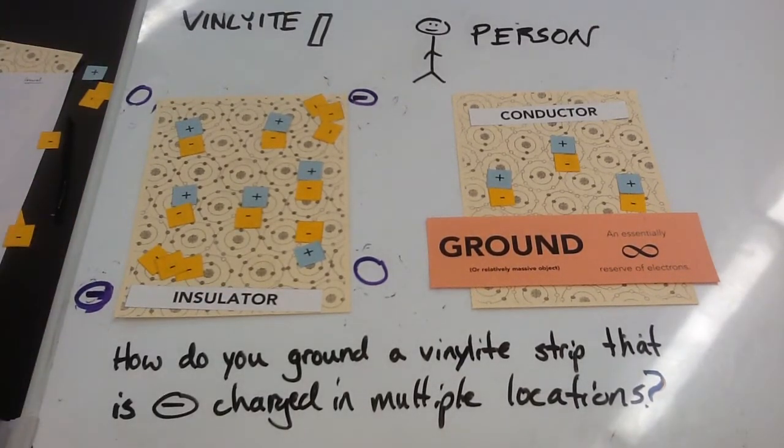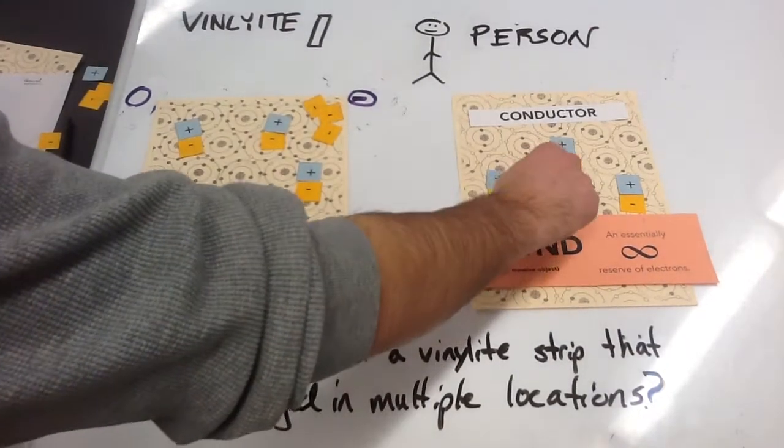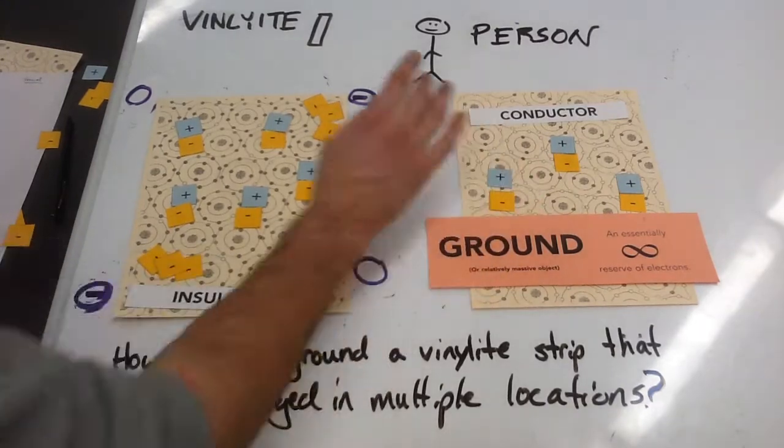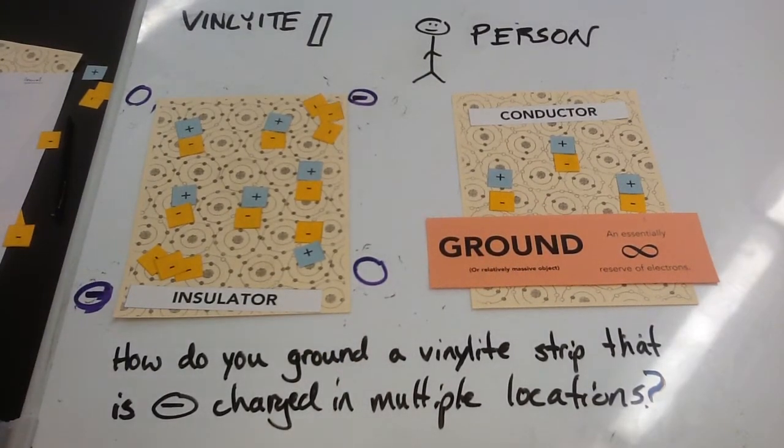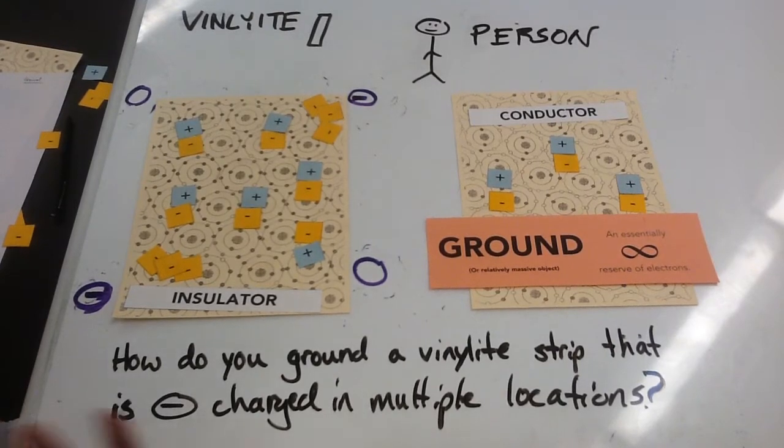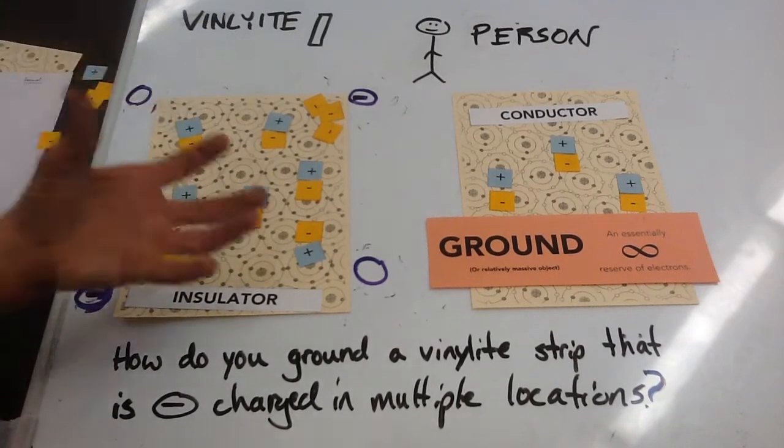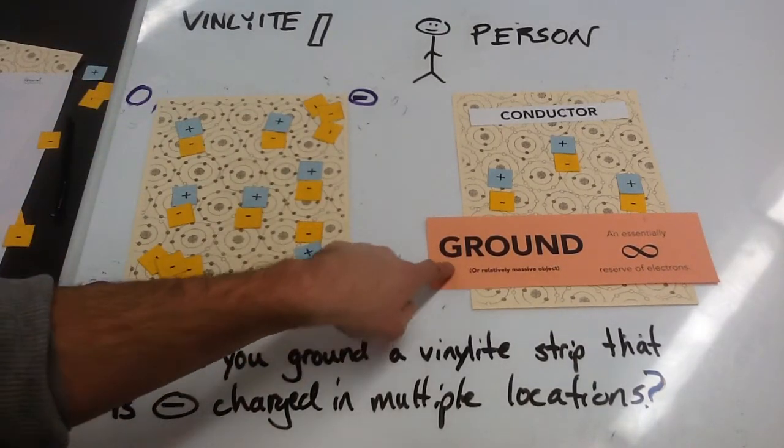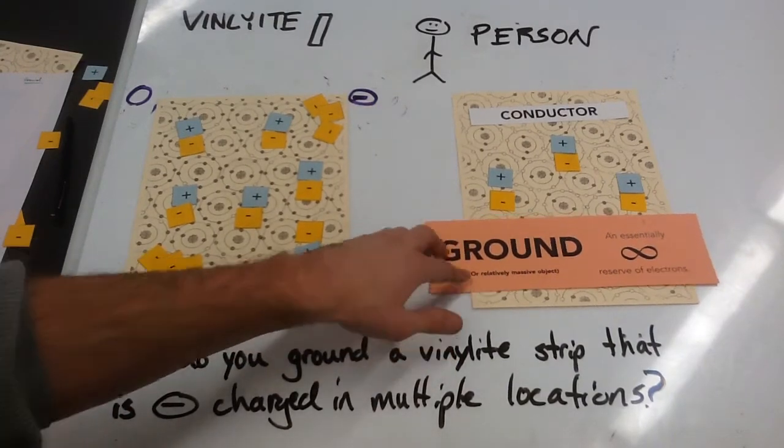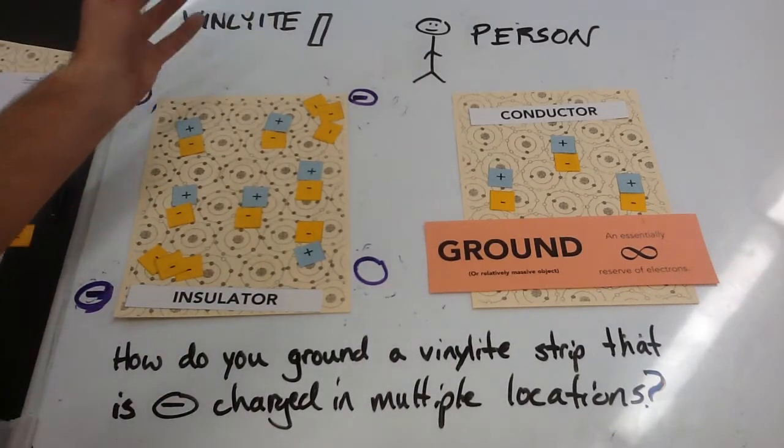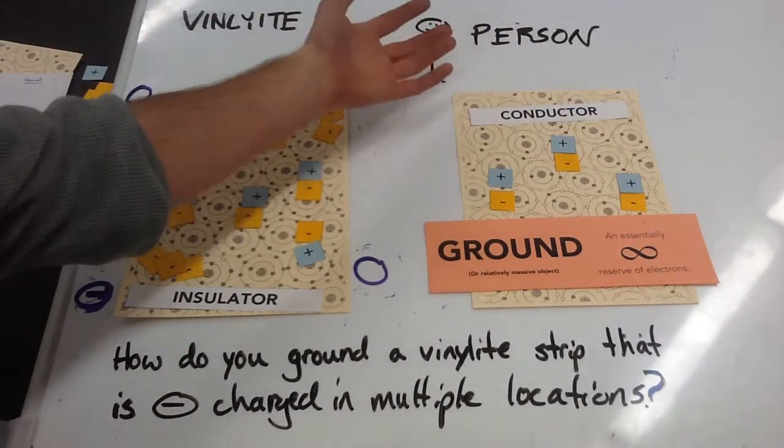All right, my next object is going to be my person. Any person, you are a conductor, which means that you have these empty valence shells so electrons can move very freely throughout the atoms, traveling along these valence shells with nothing blocking them. And in this situation, not only are you a conductor but you are also going to be considered the ground. When we're grounding, a lot of times we could be talking about the actual ground, like a really massive object like the earth, but really we're going to say that the ground when we're talking about static electricity is just any relatively massive object. The vinyl aid strip is really small compared to how much mass you have, so in this case you're essentially an infinite reserve of electrons.